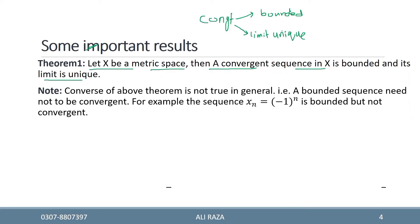لیکن اس کا الٹ درست نہیں ہوتا۔ آپ یہ نہیں کہہ سکتے کہ ایک bounded sequence لازمی convergent ہو۔ Converse of the above theorem is not true in general۔ اس کا converse یہ بنے گا کہ a bounded sequence need not be convergent۔ مثال کے طور پر sequence x_n = (-1)^n لیتے ہیں — یہ bounded ہے۔